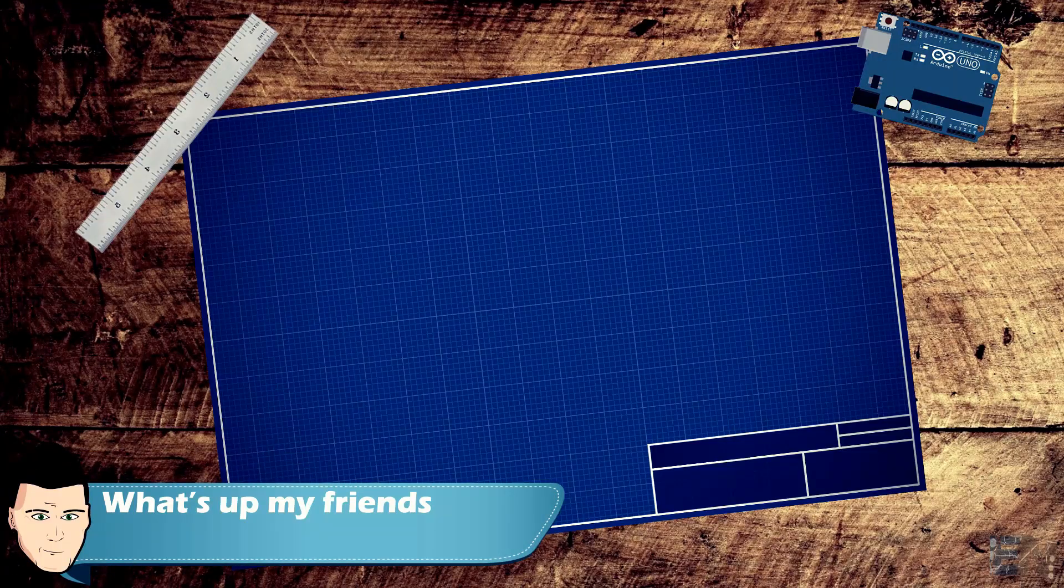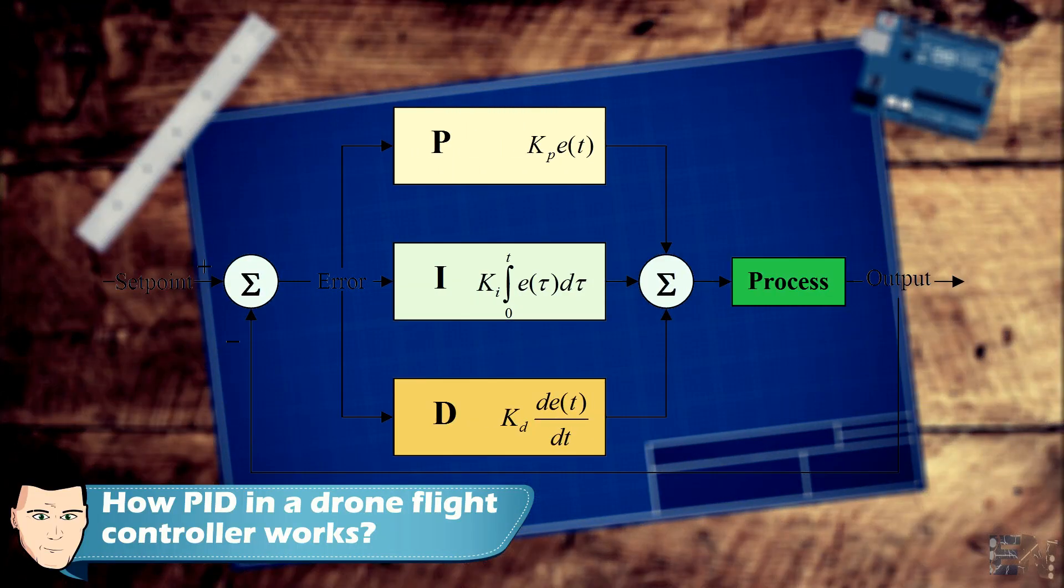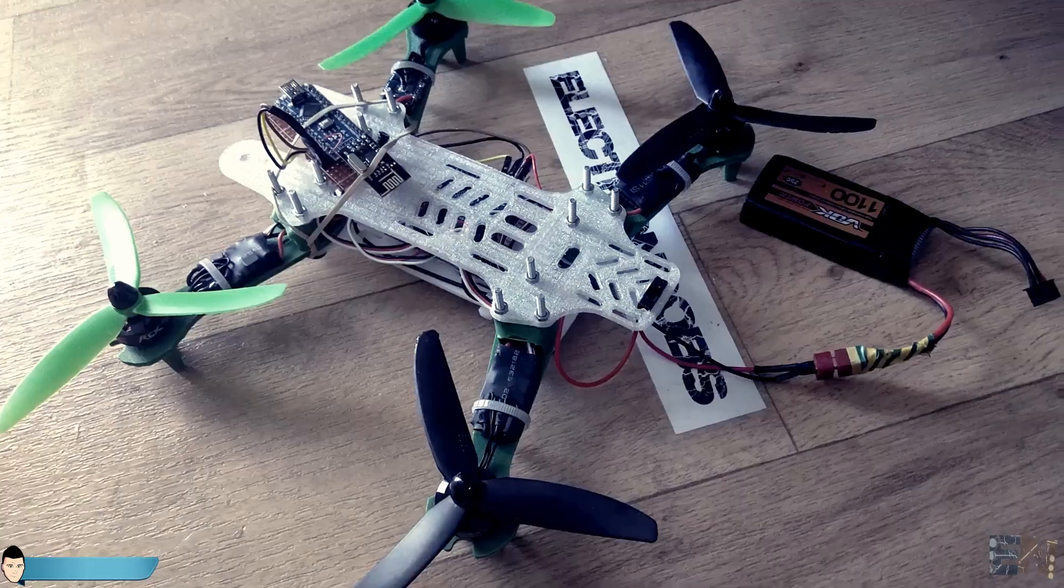What's up my friends, welcome back. In this video we will see an example of PID control for one axis movement. Once we see how the control works for just one axis, we could apply the code for two axis in case of a drone.